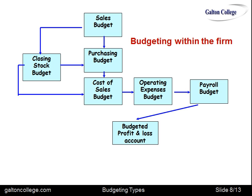So once we've got all of that, we have really the basis for a budgeted profit and loss account. We have the sales — the likely sales budget — and we have the components of the cost side: payroll, operating expenses, and the cost of sales.